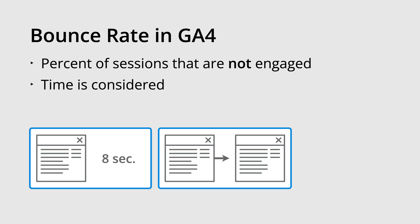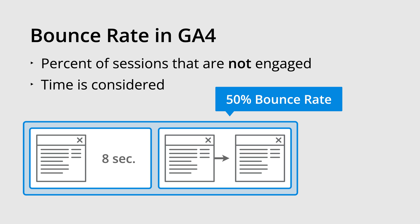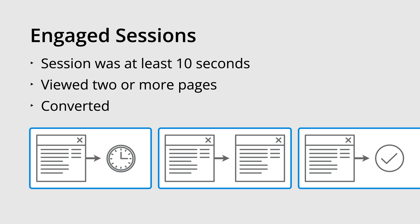Bounce rate is different in GA4 — it's the percentage of sessions that weren't engaged. This means if someone views a single page on your website and leaves within 10 seconds, then it will be considered a bounce and used to calculate the bounce rate. An engaged session is any session that lasts longer than 10 seconds, includes at least one conversion event, or has at least two page views. So just remember, bounce rate in GA4 is the percentage of sessions that are not engaged sessions.